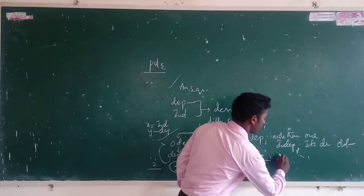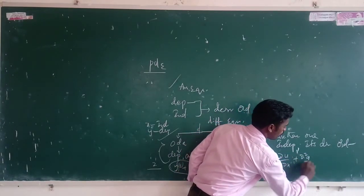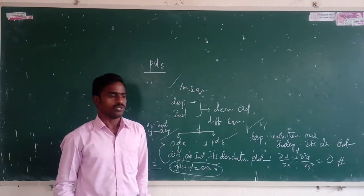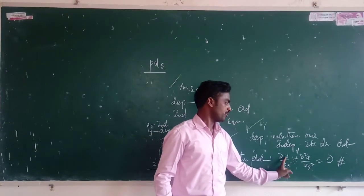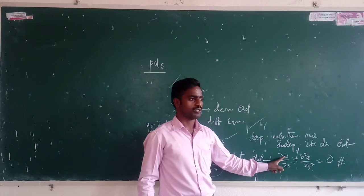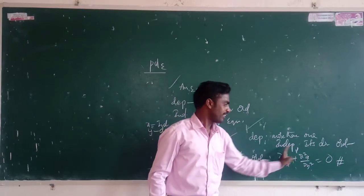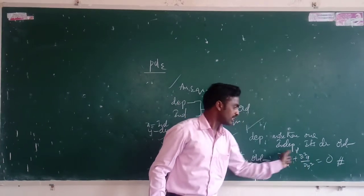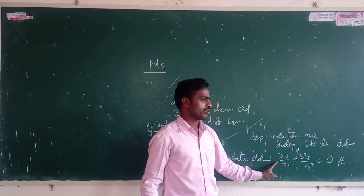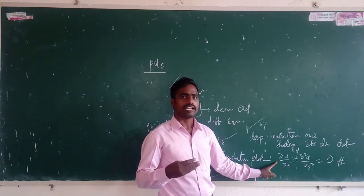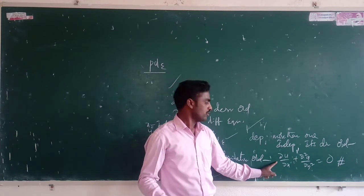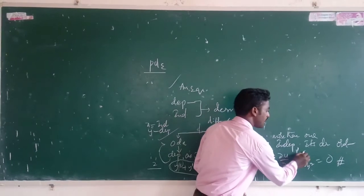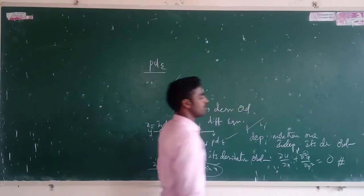Now consider another equation: d³u/dx³ + d²u/dy² = 0. Here u is a function of x and y. It depends on both x variable and y variable — that makes it a partial differential equation. The order of a partial differential equation is the highest derivative occurring in it. First order, second order — I order the differential equation accordingly.